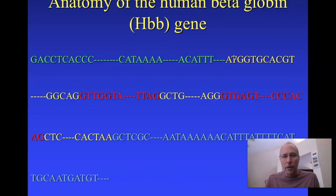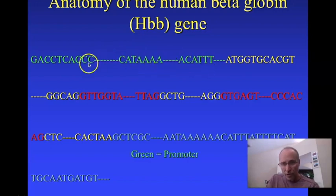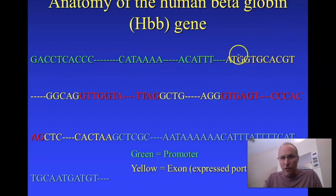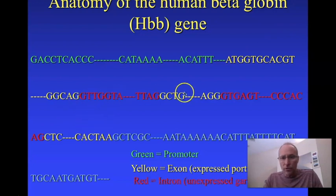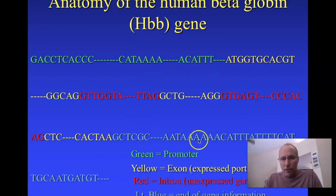So how did we get this sequence of amino acids? It came from this sequence of DNA — the green section is the promoter, which controls when the gene is on or off. The yellow sections are the exons — the expressed portions — and in this particular gene there are three exons. The red portions are introns, the unexpressed portions inside the coding region, and in this case there are two of them.